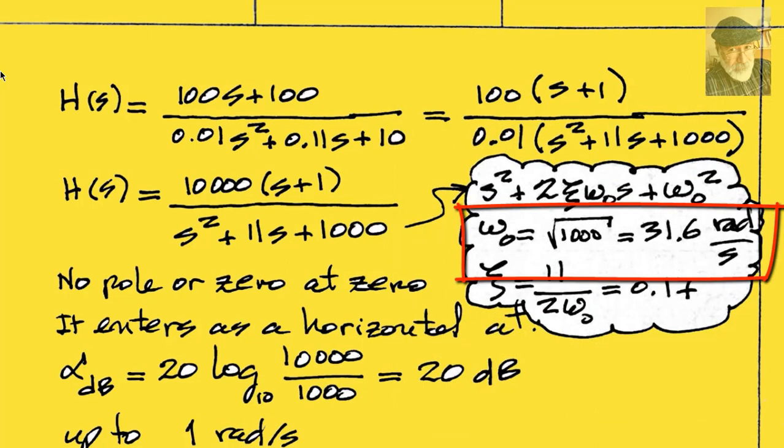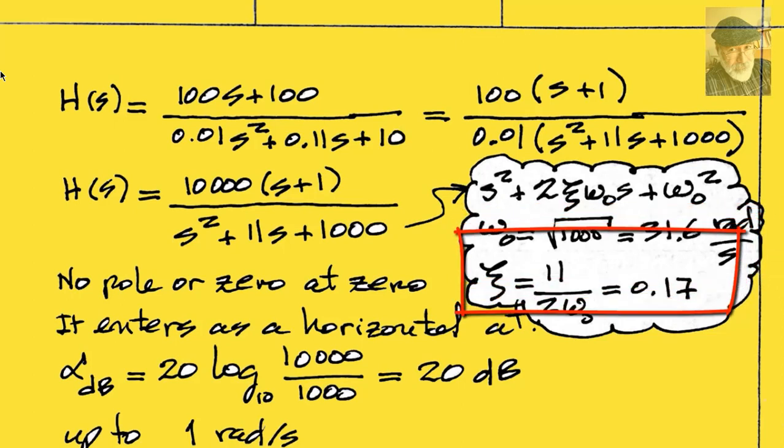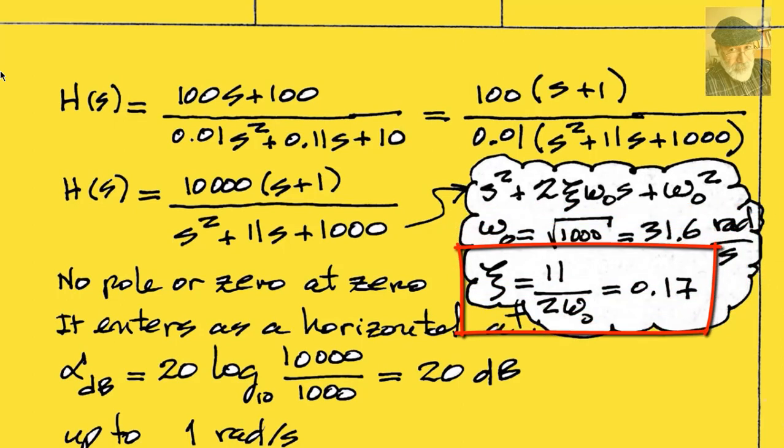Yes, at omega naught, 31.6 radians per second. What is the associated damping factor, zeta? 11 divided by twice omega naught, 0.17.